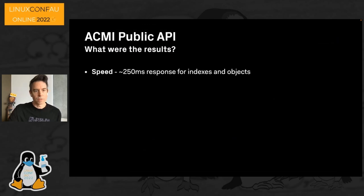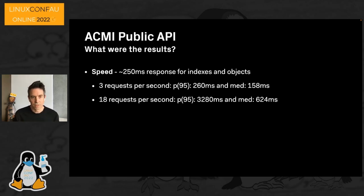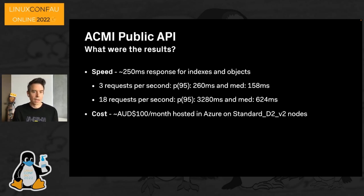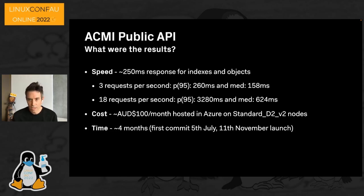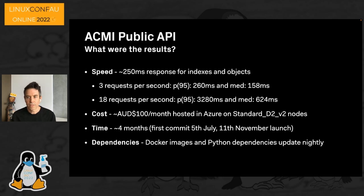Without any optimization to Gunicorn yet, at about three requests per second we're getting around 158 milliseconds response time, going up to about half a second at 18 requests per second. That's running pretty well for $100 a month on standard Azure D2 v2 nodes. The first commit doing rough prototypes with Flask was on the 5th of July, and on the 23rd of September we had our infrastructure running in production — giving us a lot of time for final touches for the 11th of November, so about four months total. Because of the limited number of Alpine and Python dependencies, we don't pin dependencies at all, so they update nightly with every build, giving us a pretty reasonable security posture.